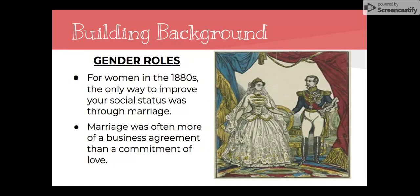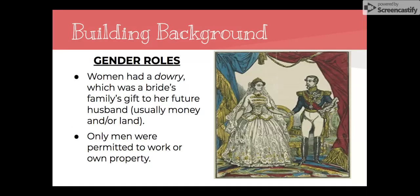Gender roles are going to play a huge part in the story. For women in the 1880s, the only way to improve your social status was through marriage, and marriage was more often a business agreement than a commitment of love. Women had what was called a dowry, which was a bride's family's gift to her future husband. That dowry usually included money, land, expensive possessions, gold, candlesticks — anything of value that the bride could offer to the husband — hence the business agreement.